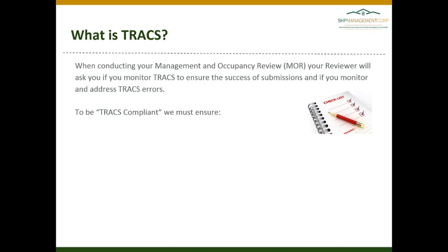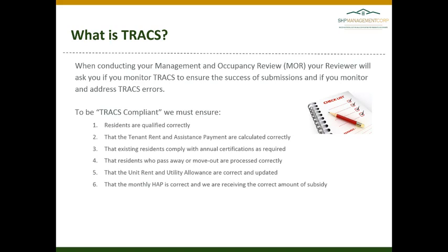In order to show that we are being compliant with TRACS requirements, we have to show that residents are qualified correctly, that tenant rent and assistance payments are calculated correctly — which includes showing the income verifications and other documentation used to calculate these figures — that existing residents comply with annual recertifications, that residents who pass away or move out are processed correctly, and that the unit rent and utility allowance are correct and updated.